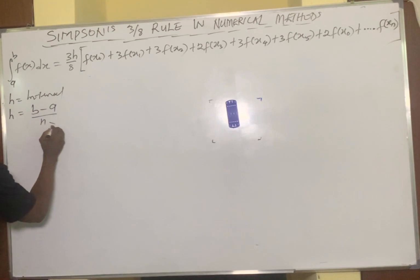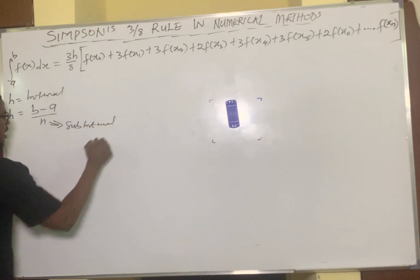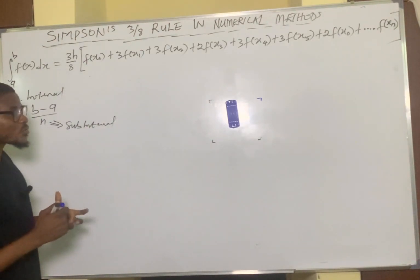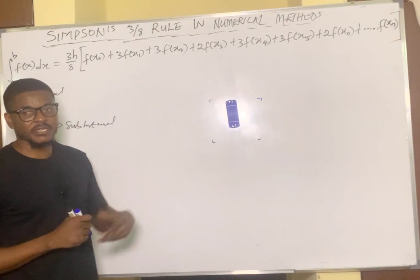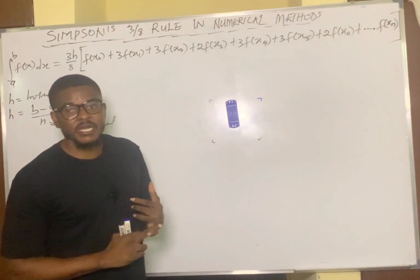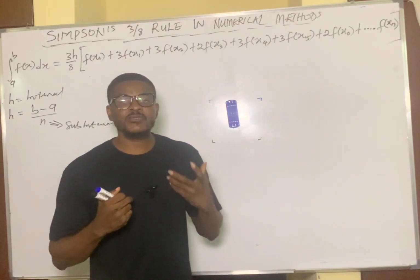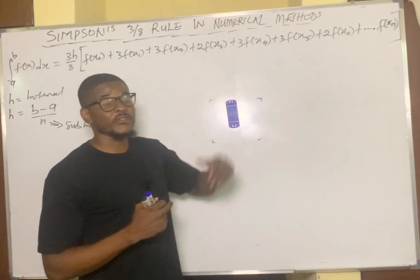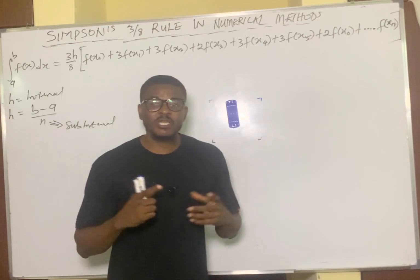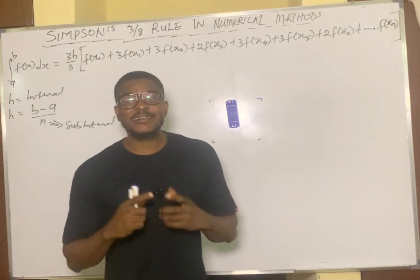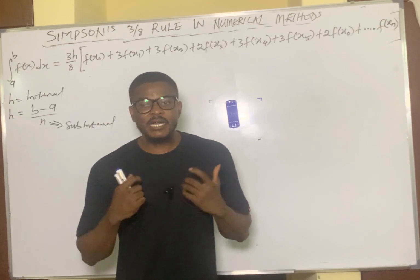Now n is actually the subinterval, and the subinterval must be a multiple of 3 — that is what determines the length of the equation. So you can have your subintervals as 3, 6, or 9. Depending on the number of subintervals you choose, it determines the length of the equation you'll obtain. I always tell students: unless otherwise stated, always choose your subinterval as 3 because it makes the equation shorter and the question easier to solve and understand.